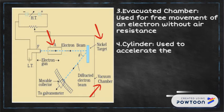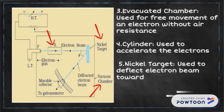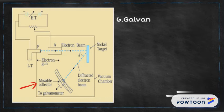The nickel target could be rotated in a circular motion. Galvanometer, used to measure the small values of current. Movable detector, used to detect the intensity and scattering of electrons deflected by the nickel target, and could be rotated.